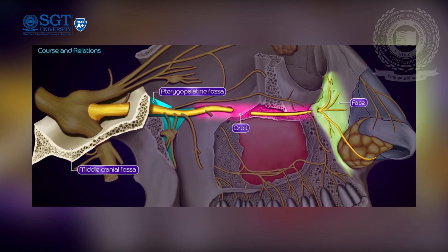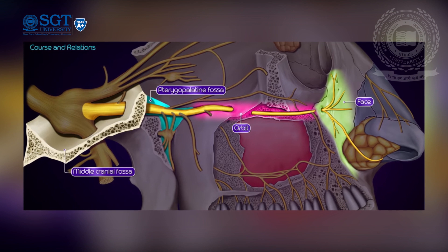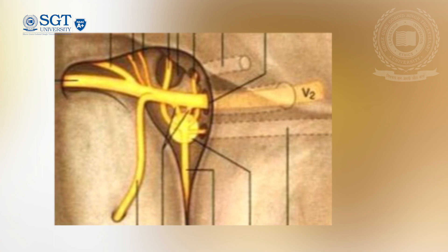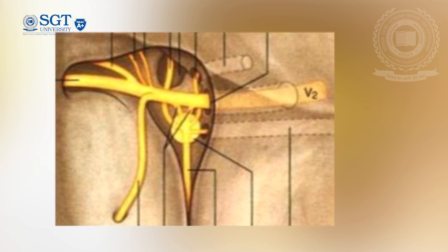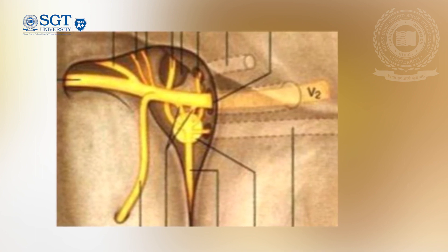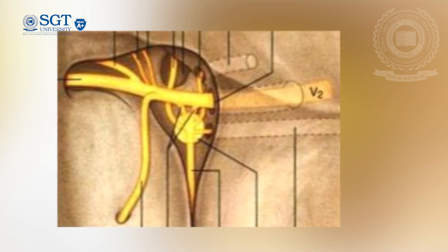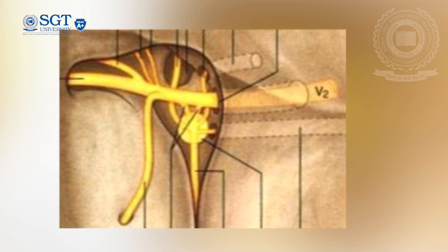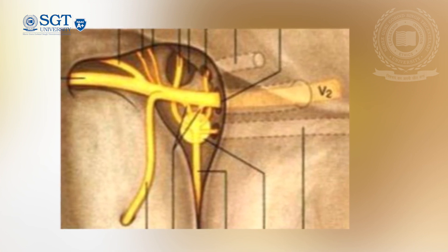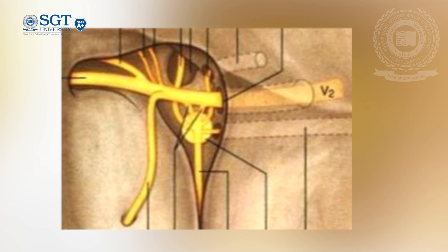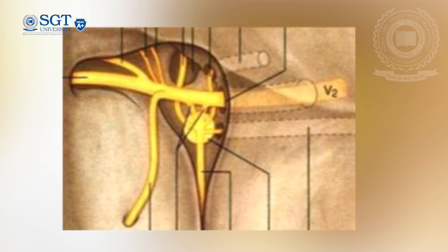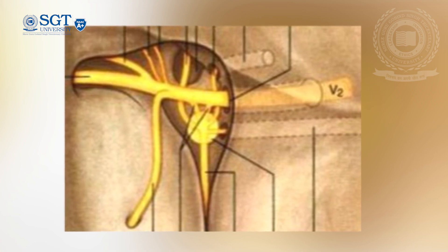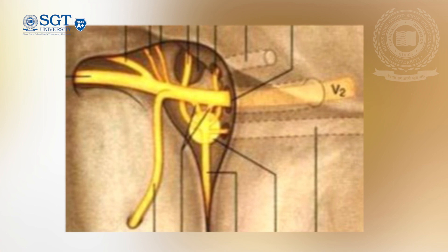The pterygopalatine fossa is a pyramidal space located between the pterygoid bone posteriorly, the perpendicular plate of the palatine bone anteromedially, and the maxilla anteriorly. It opens laterally into the infratemporal fossa through the fissure and superiorly through the inferior orbital fissure into the orbital apex. The pterygopalatine ganglion communicates with the foramen lacerum, the vidian canal, the nasopharynx, the oral cavity through the palatine foramen, and the nasal cavity through the sphenopalatine foramen.